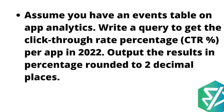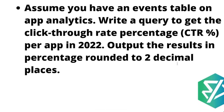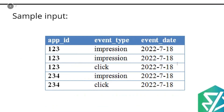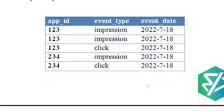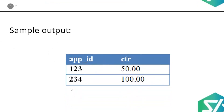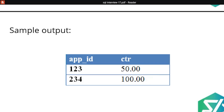Let's see what exactly is click-through rate percentage. But first, let's look at a sample input and sample output. The sample input has three columns: the app ID, the event type, and the event date. There are two event types: impression and click, across two app IDs. In the sample output, for each of the two app IDs — 123 and 234 — we have found the CTR rounded to two decimal places: 50% and 100% respectively.